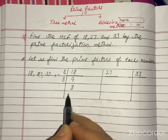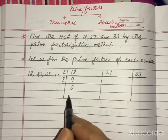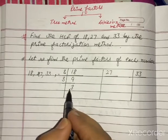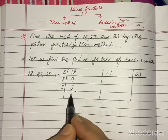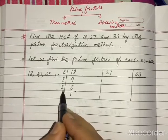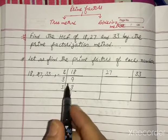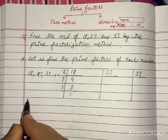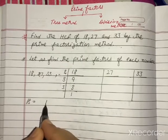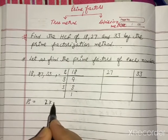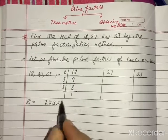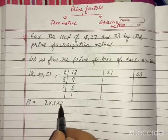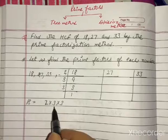So we divide with 3: 3 threes are 9. Now we have 3, and 3 always comes in the table of 3 — 3 ones are 3. So we are done. The prime factors of 18 are 2, 3, and 3.